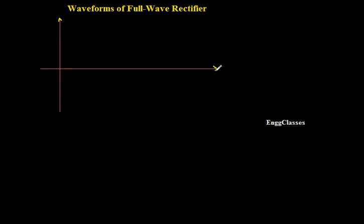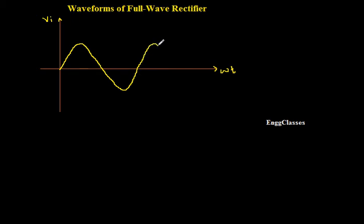Let the x-axis indicate omega t and the y-axis be the input vi. vi is equal to vm sin(omega t), so it takes a sinusoidal waveform. Let me draw one sinusoidal signal — this I call the input signal vi — and let the amplitude be vm. So what is the output I am going to get for such a waveform?